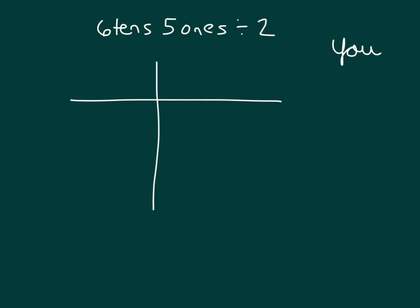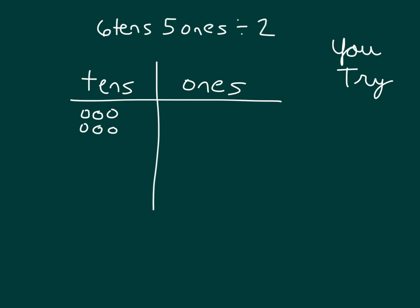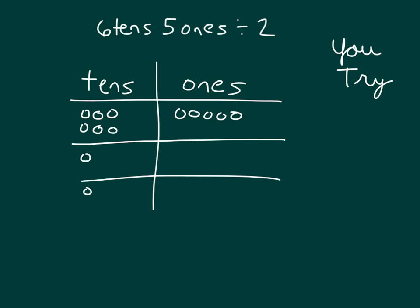Can you try right along with me? So let's do the work together. We have six tens and five ones — model it in your place value chart. What are we dividing by? Two. Pause the video while you continue your work. Remember, there'd be two groups then. We'll divide those tens first.